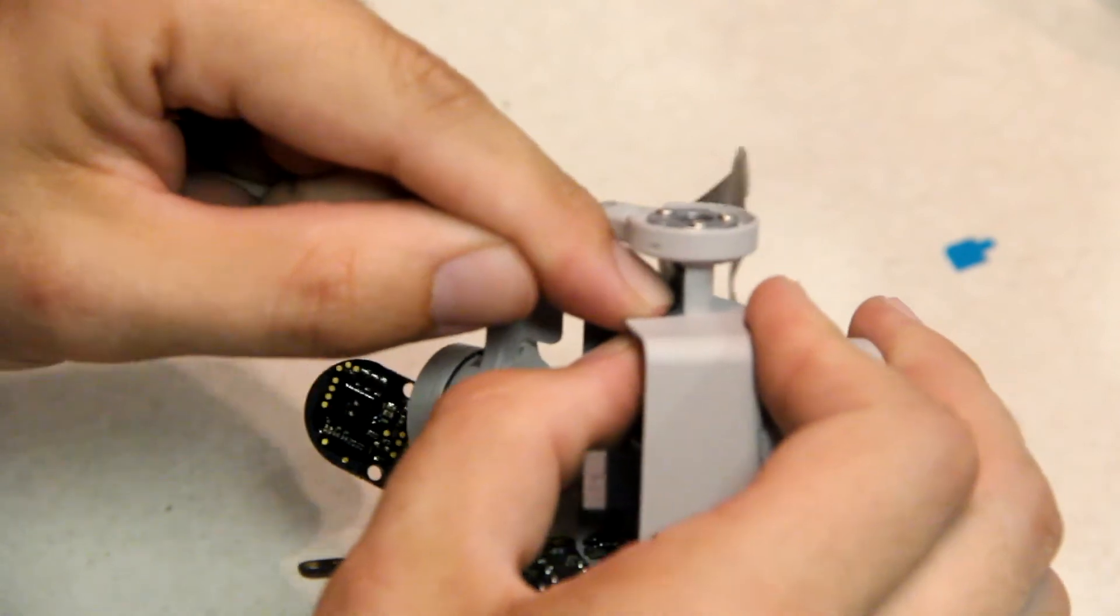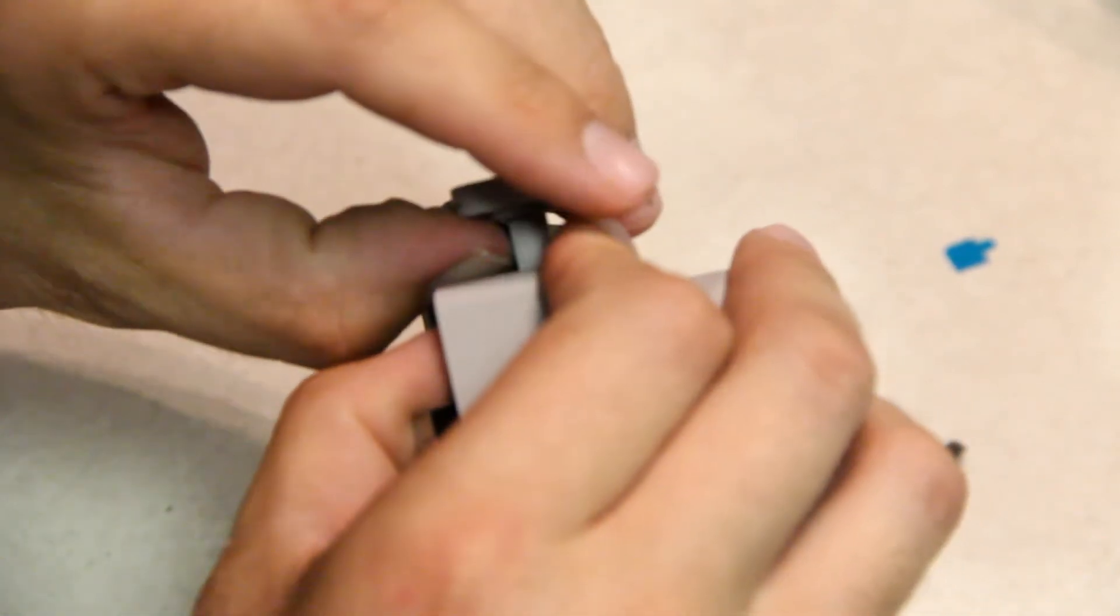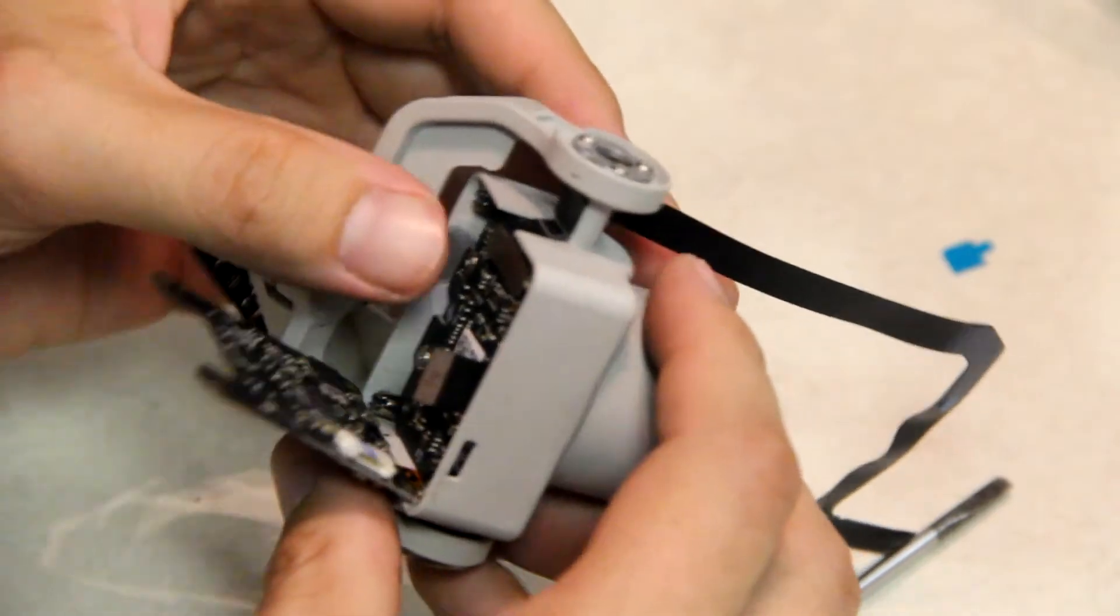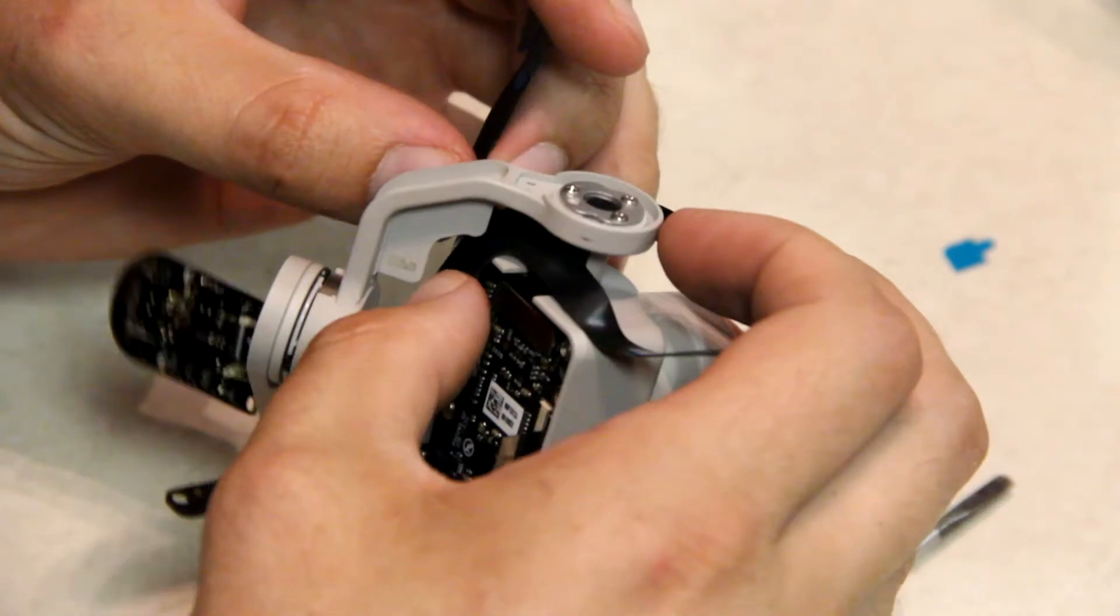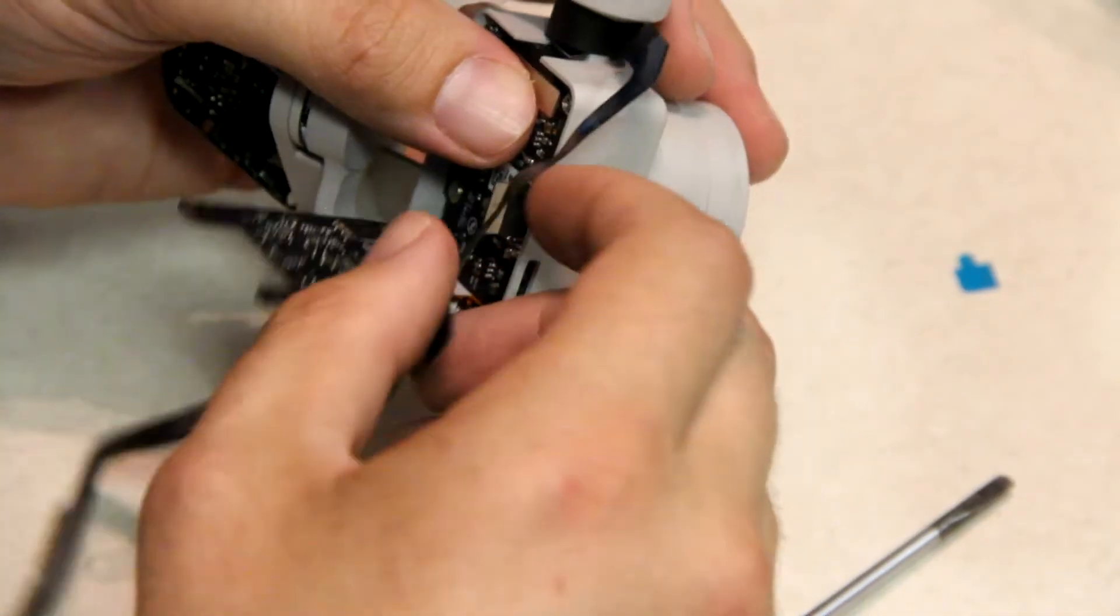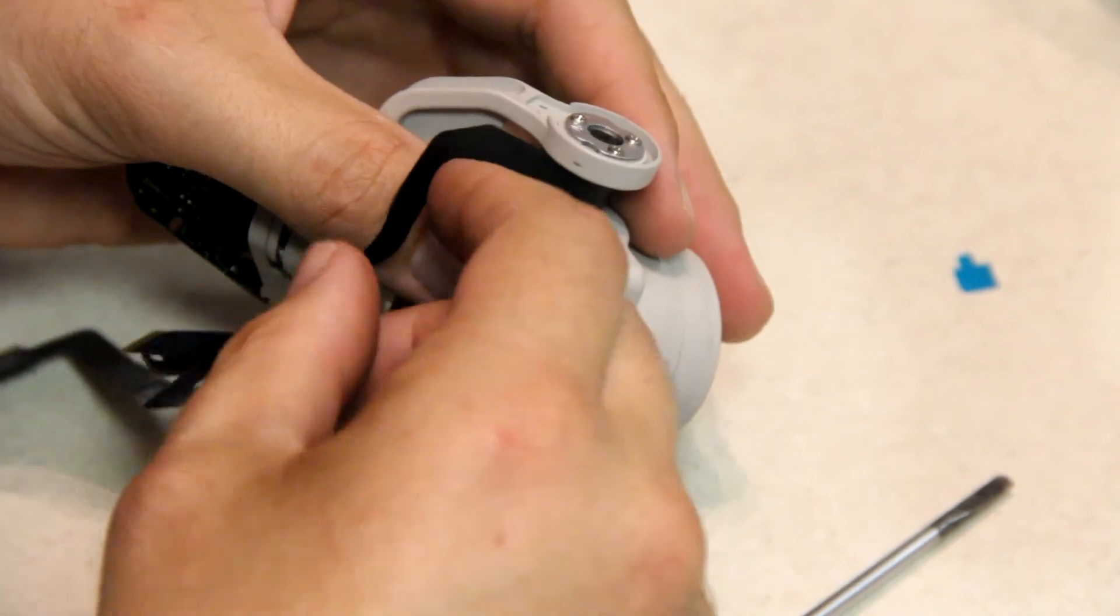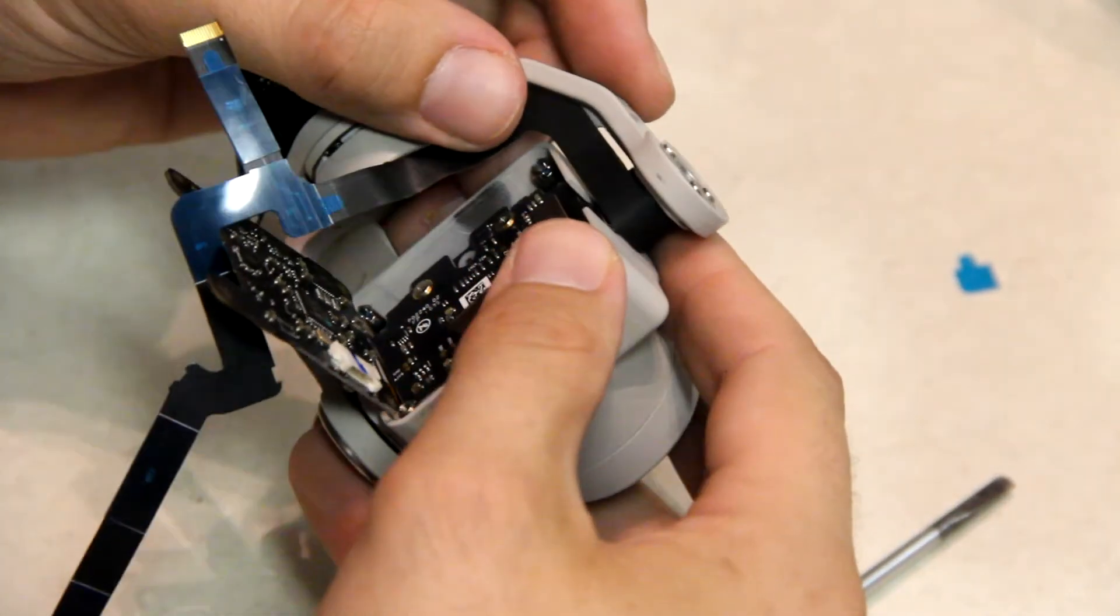Next you want to gently put that ribbon cable until the adhesive makes contact. We have to wrap this around one time until it comes all the way around and then the shape matches where it needs to go.